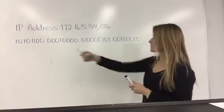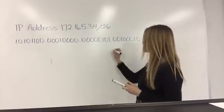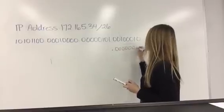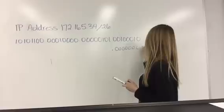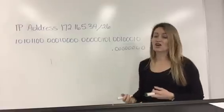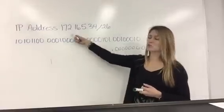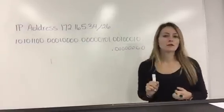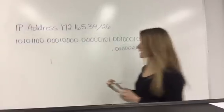So our first three octets are going to stay the same, but the last one, if we made these all zeros, 1, 2, 3, 4, 5, 6, 7, 8, then that means our network address is 172.16.5.0. So network address,